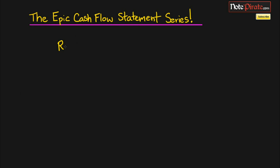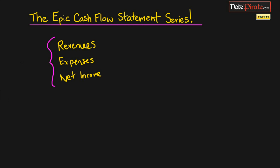To begin, let's look at an income statement. The very general parts of an income statement are revenues, expenses, and net income. I wanted to go over this because I wanted to talk about accruals first. The income statement is prepared on an accrual basis, which means that revenues are reported when they are earned and not when cash is received, and expenses are reported when they are incurred and not when cash is spent.